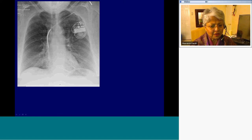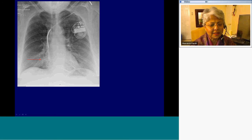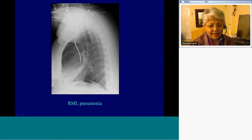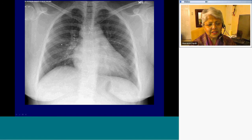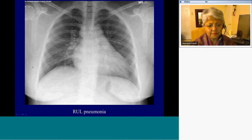Here it's not so subtle — the right heart border is clearly silhouetted, so we know that there's something wrong in the right middle lobe, and that's confirmed by the lateral view. And here is a variable increased density above the minor fissure caused by a right upper lobe pneumonia.